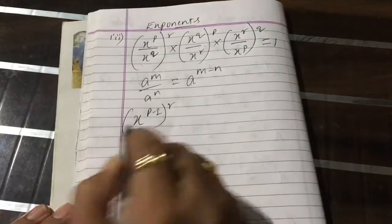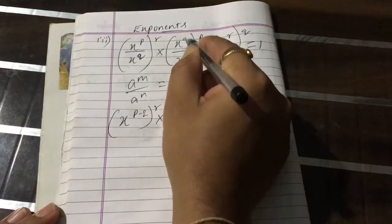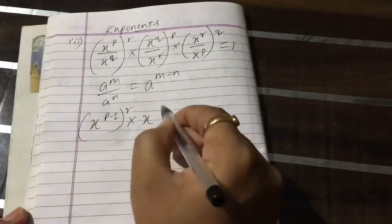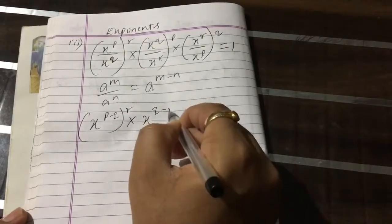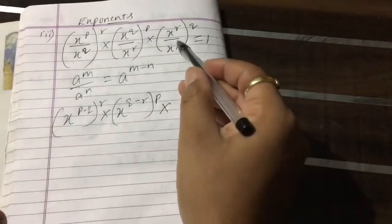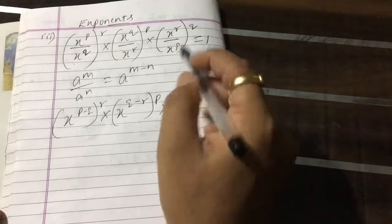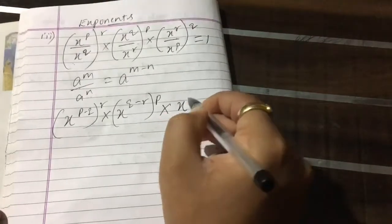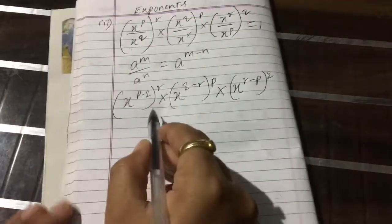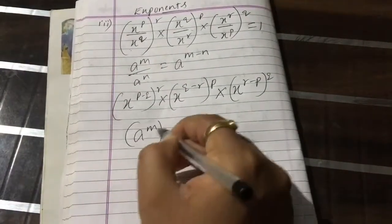Same way, here also we have the same base and different power in division, so we subtract the powers and get x^(p minus r) whole power p. Here also we have the same base and different power, so in division we keep the single base and subtract the powers, giving whole power q.